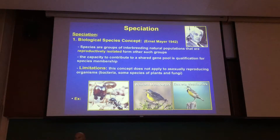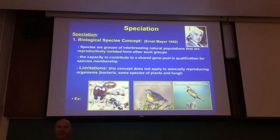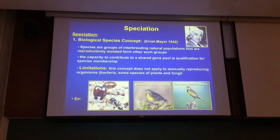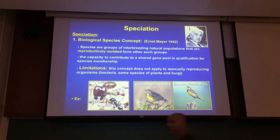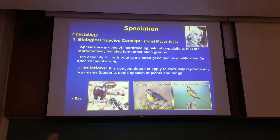It has limitations. It only works for sexually reproducing organisms, which basically eradicates 80–90% of the planet. It doesn't work for microbes that are asexual, asexual fungi, or the many plants that have asexual stages. But it does work quite cleanly for sexually reproducing organisms like ourselves.